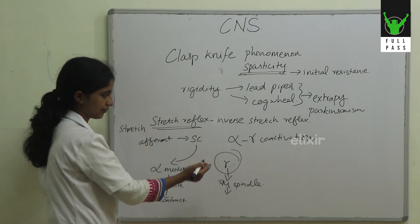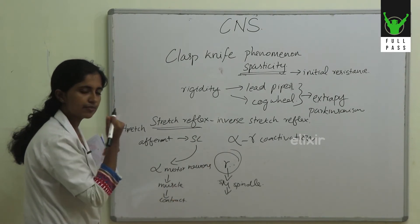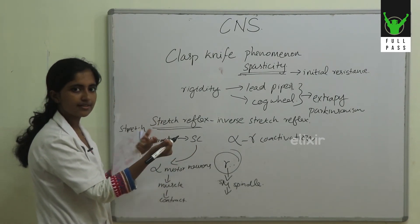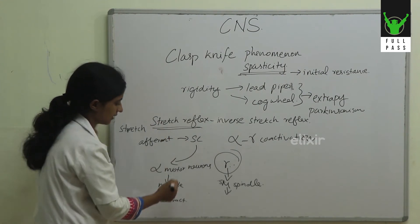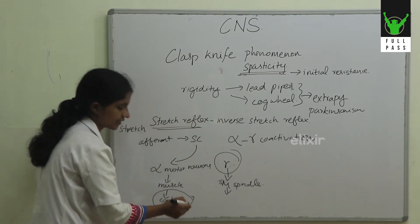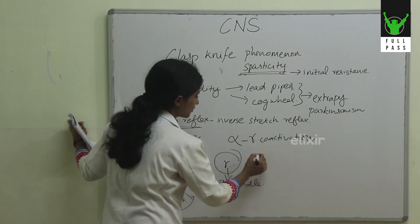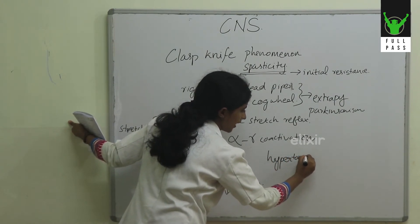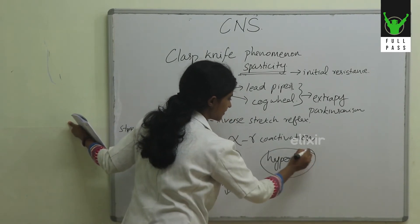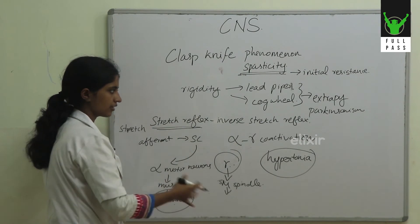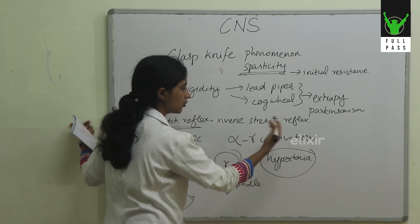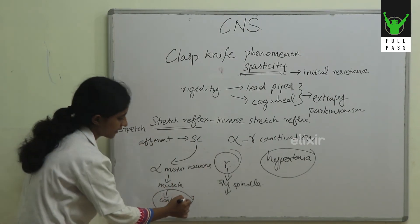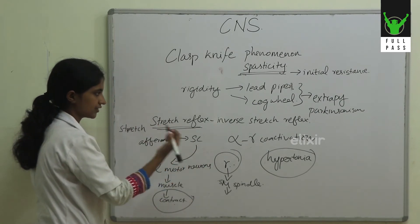During initial flexion of the elbow, you get resistance because of this stretch reflex. When you flex the elbow, the tendon of the triceps is actually getting stretched, and the triceps gives a contractile response. In hypertonia — spasticity or rigidity — the alpha fibers are more active and alpha-gamma co-activation is also greater, producing an increased contractile response. That is the reason for the initial resistance.